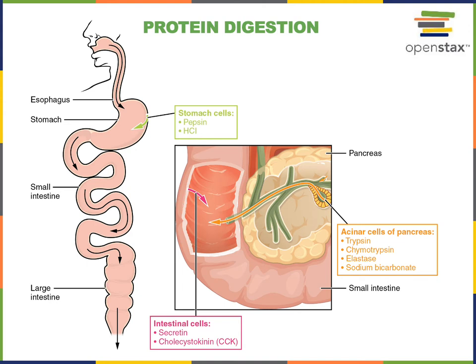Pepsin initiates chemical digestion of proteins by catalyzing hydrolysis of the peptide bonds within polypeptides, producing shorter peptides. But this is just the beginning of the chemical digestion for proteins. There's a large number of enzymes that catalyze the hydrolysis of peptide bonds between specific amino acids, and most of these are proteases secreted by the pancreas.